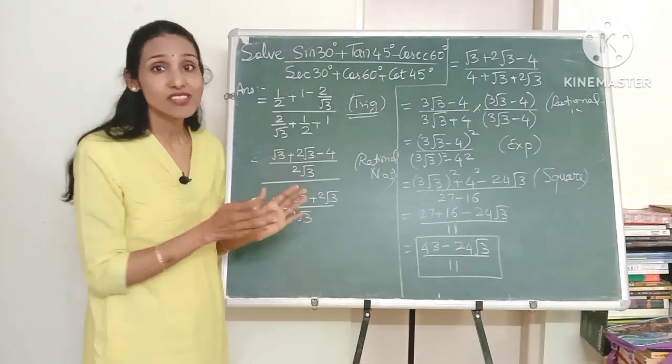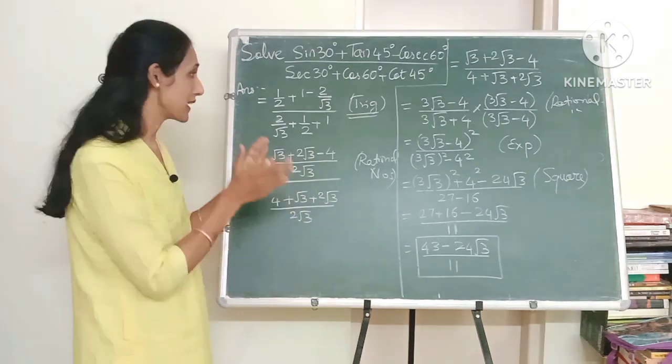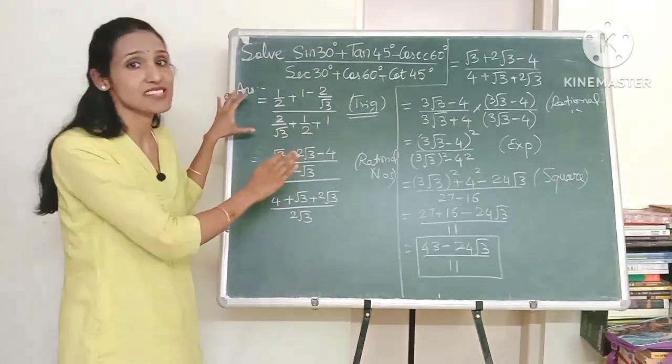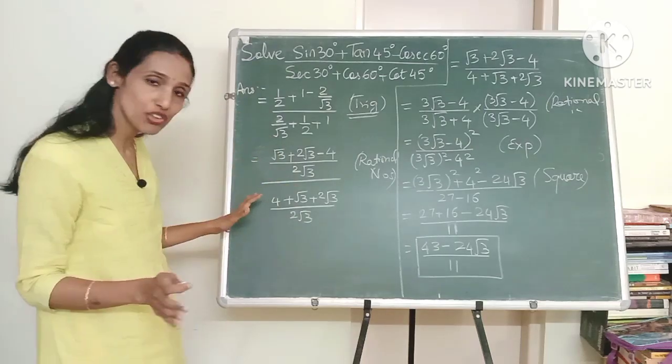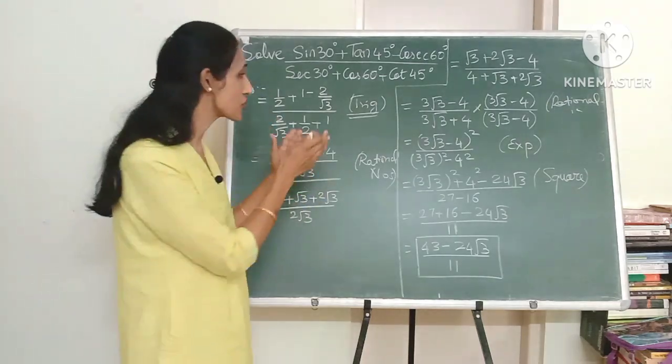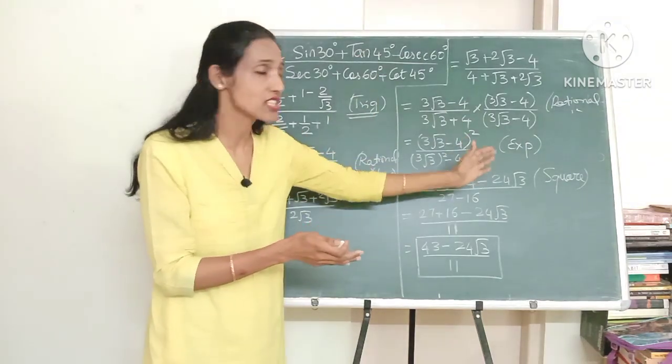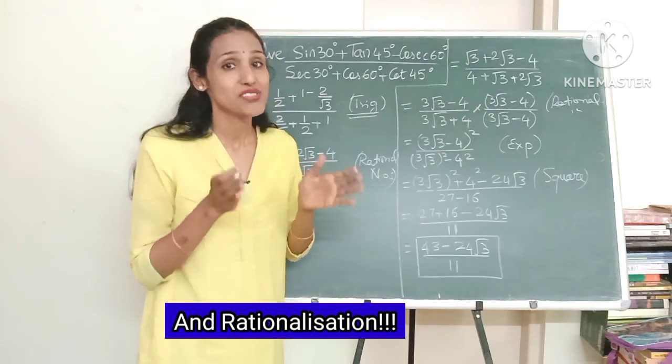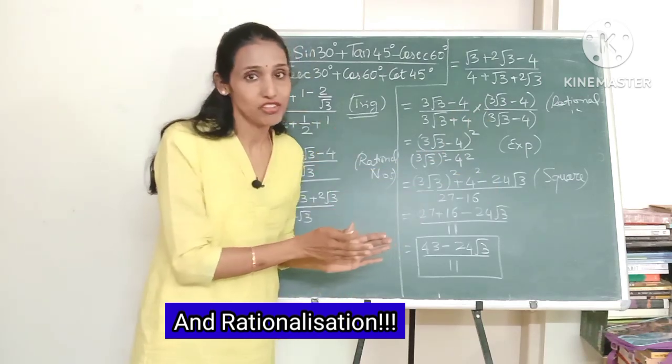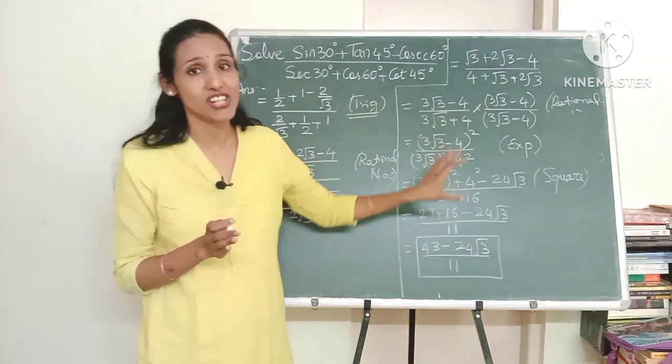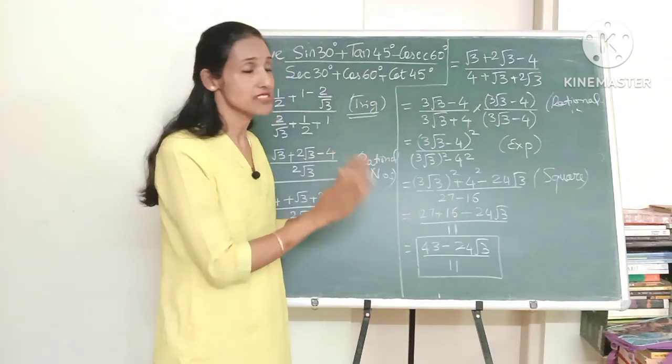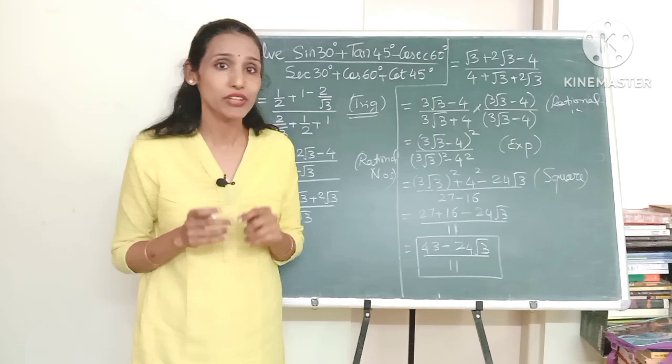Now yes this was a trigonometry question but the trigonometry part got over in the first step itself and after that there was no trigonometry. We have only used rational numbers, expansions, squares and square roots. So apart from trigonometry you also need to be good in these chapters, and not just these chapters. Let me show you one more example.